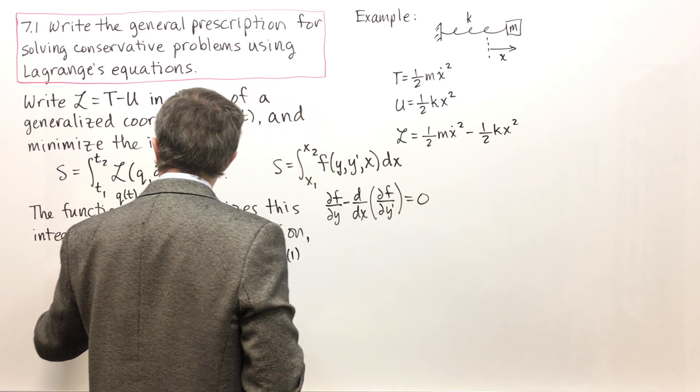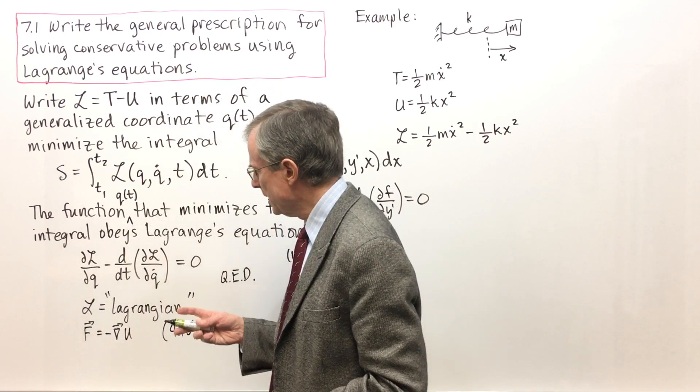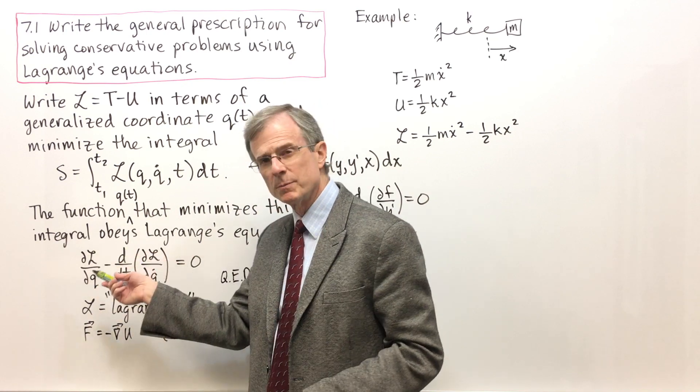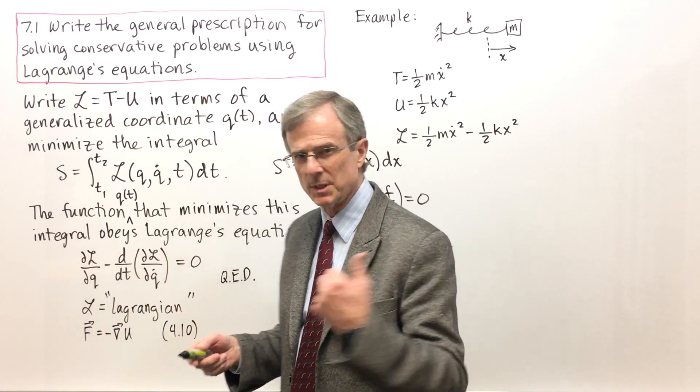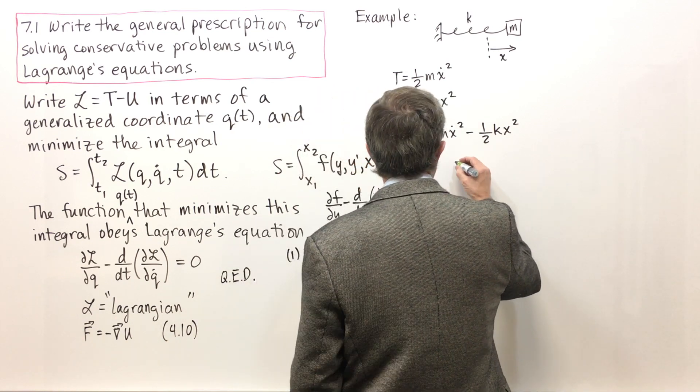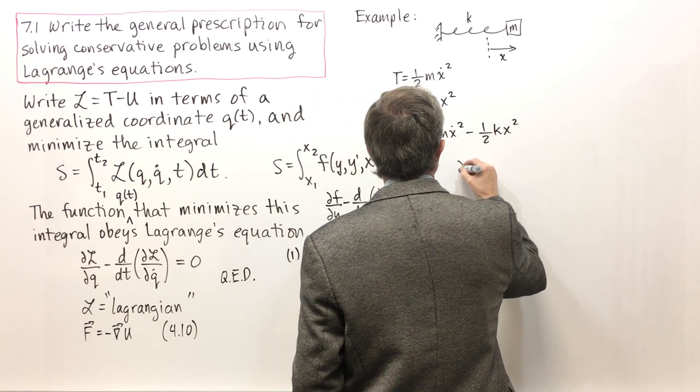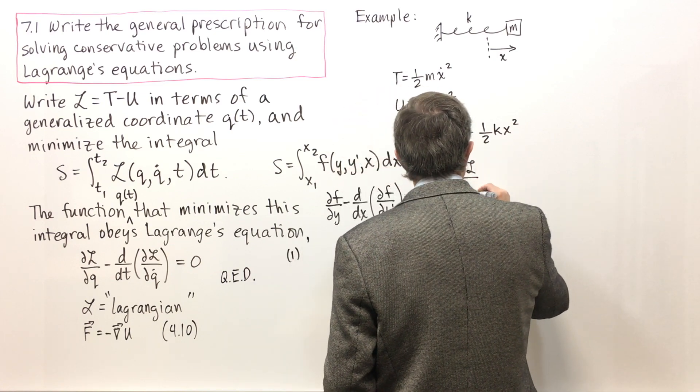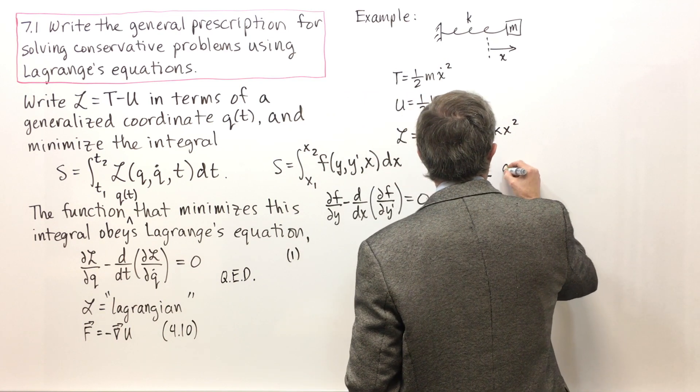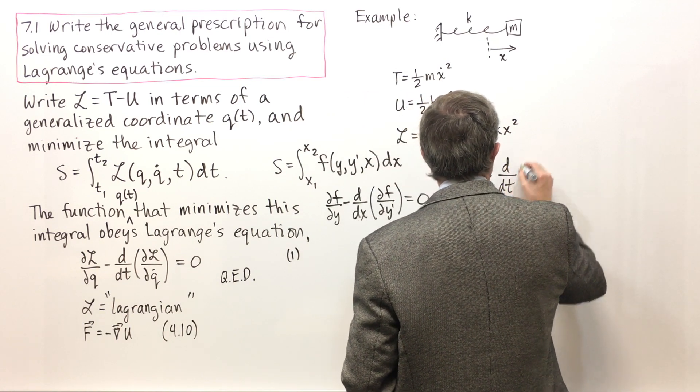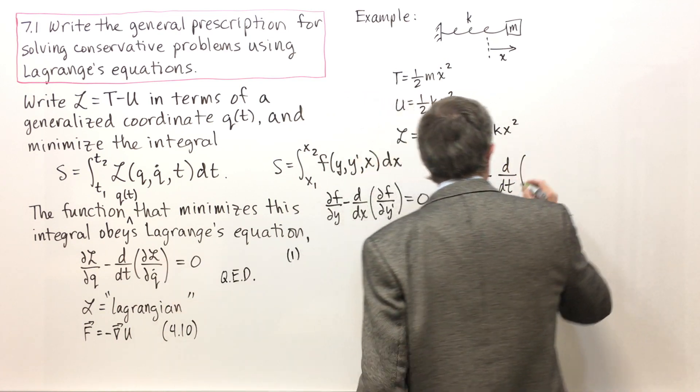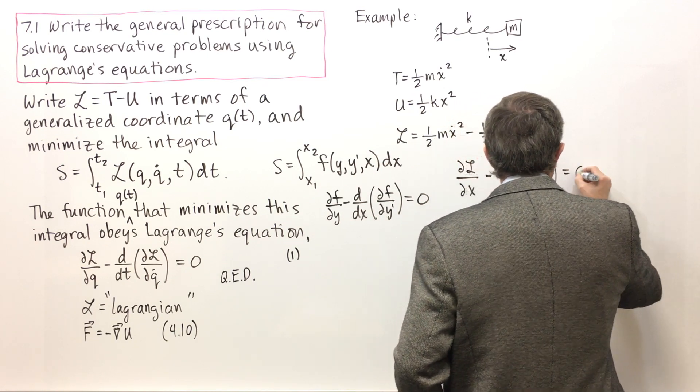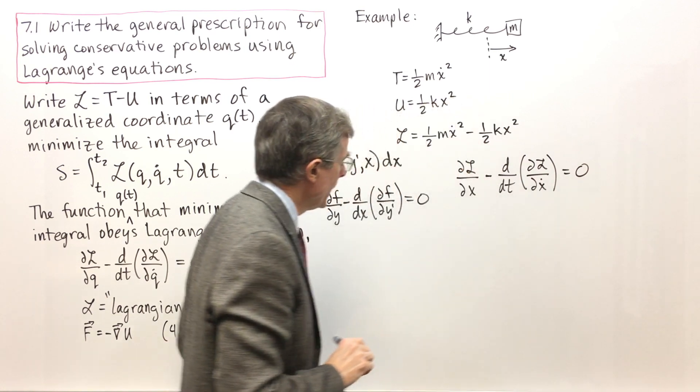So now if we rewrite this equation, that's the next step in applying Lagrange's equations is to rewrite this in terms of your generalized coordinate, which is in our case x. So let's see what happens: dL by dx, replacing q by x, minus d by dt of dL by dx dot equals zero.